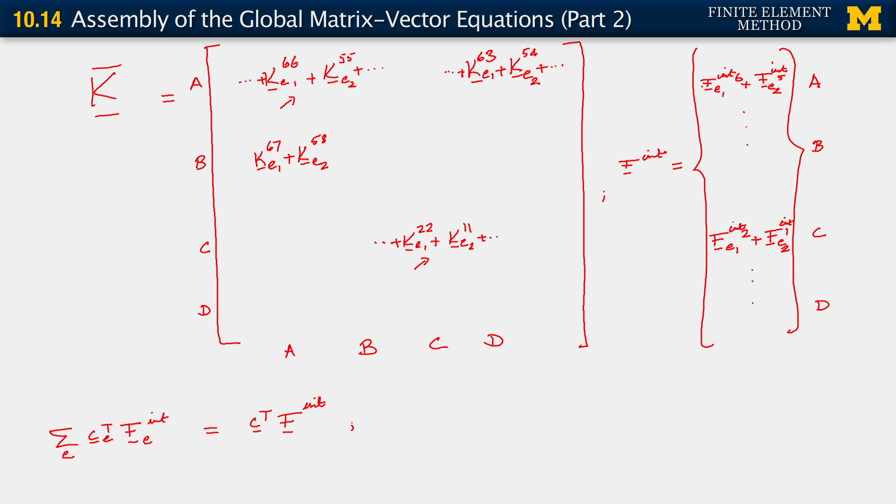And of course, there could be more contributions here, because of the fact that there are more elements off to the side. So all of those contributions would go into those entries for global nodes A and C. So that's how we set about assembling our global stiffness matrix K bar, and our global force vector F internal. We'll end the segment here.